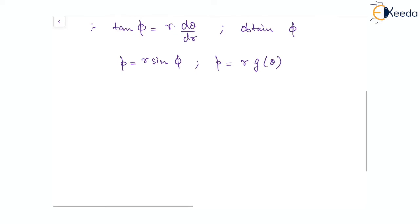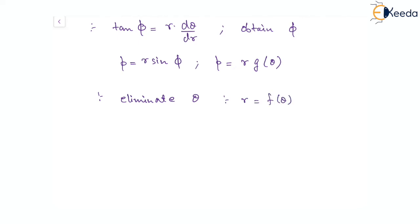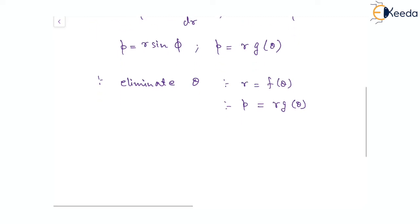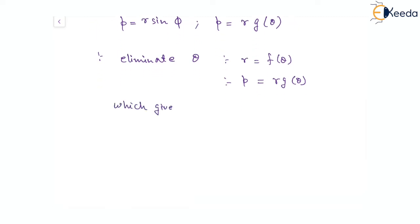Now all we have to do is eliminate θ from the two equations, that is r = f(θ) and p = r · g(θ). Eliminating θ will give us an equation in terms of p and r only. This is our p-r equation, or Pedal equation.